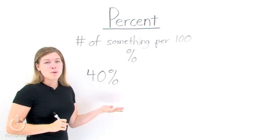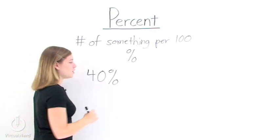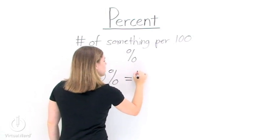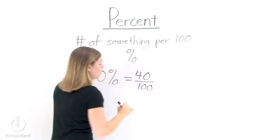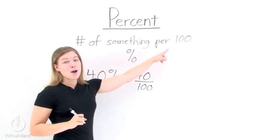Now there's multiple ways to write a percent. We can also write this as a fraction. To do that, all we do is write the number 40 and put it over 100, because it's the number of something per 100.